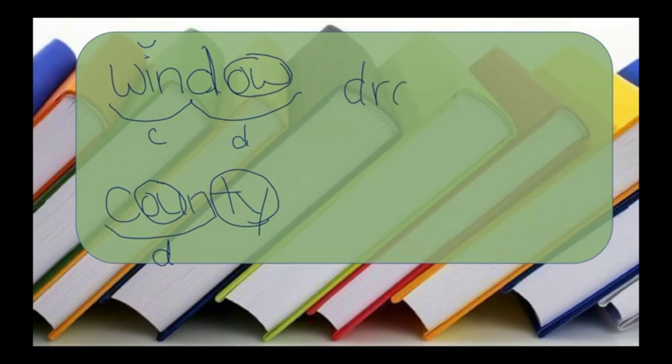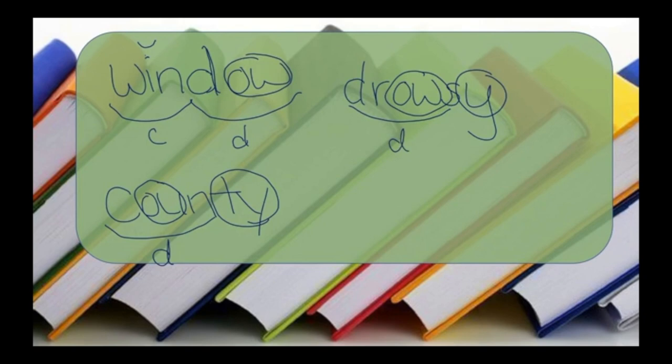The next word we're going to look at is drowsy. Again, we have a Y suffix. DROW is a syllable, and we can mark the OW as being a double vowel.